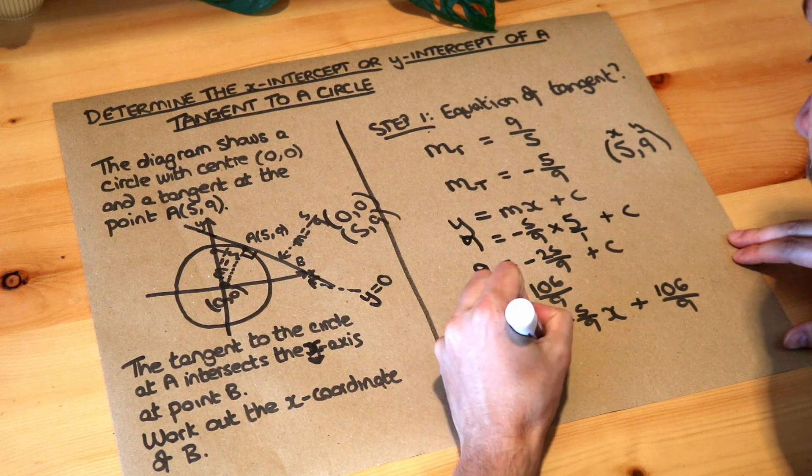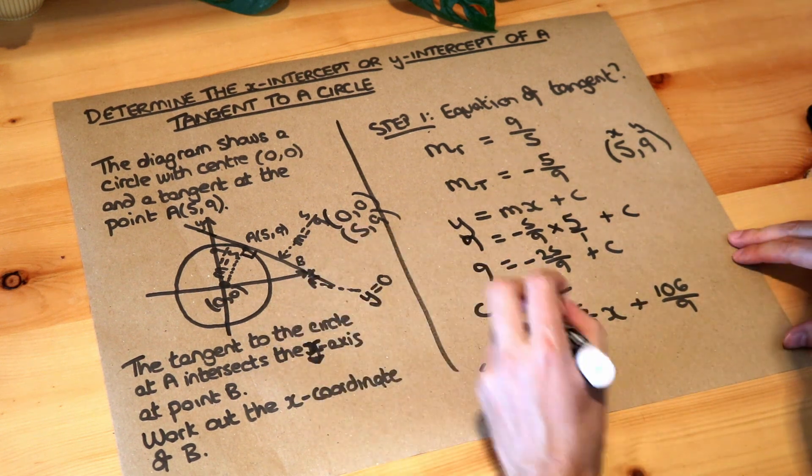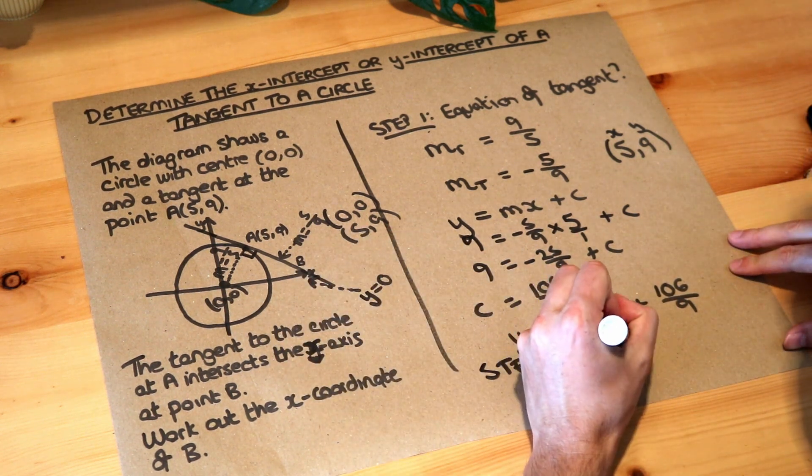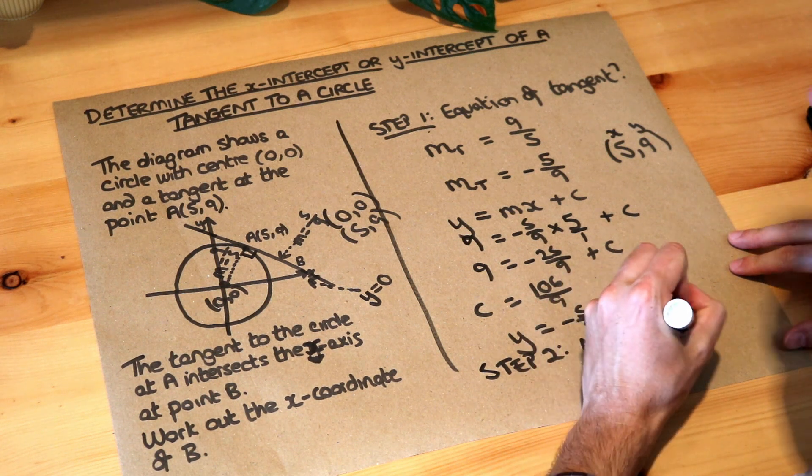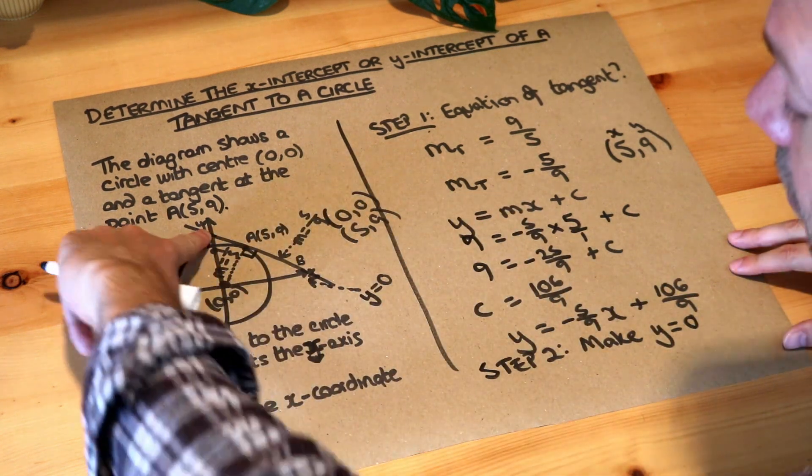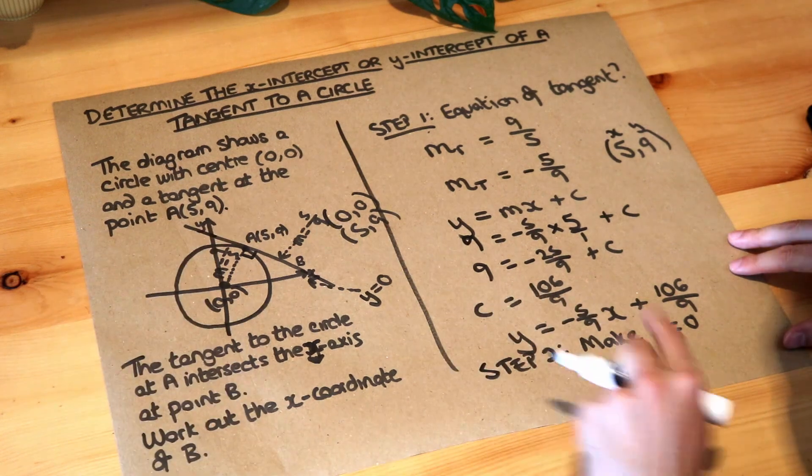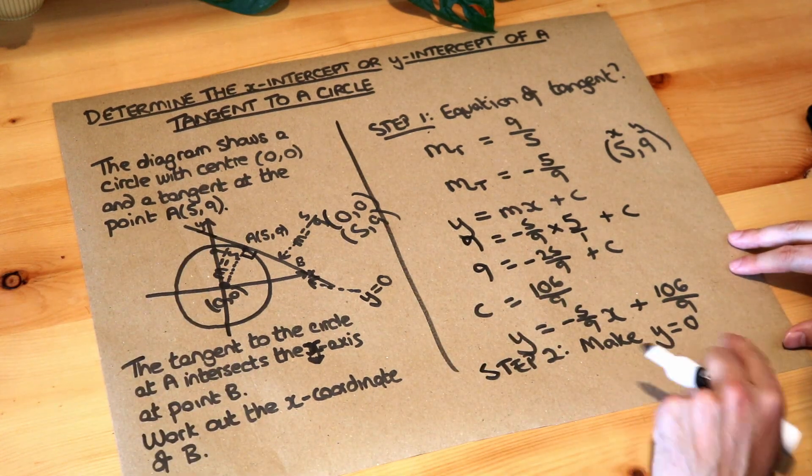So step 2 here, if we're finding the x-intercept, we're going to make y = 0. But if you are finding the y-intercept, then you'd make x = 0. But here we want to find the x-intercept, so we're going to make y = 0.